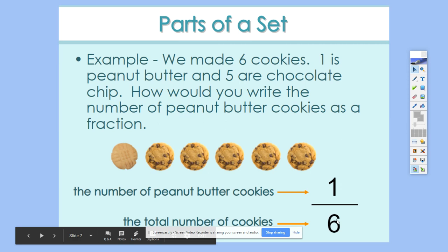I could have also asked if the question said, how many are chocolate chip? I could have wrote five out of six are chocolate chip because one, two, three, four, five.